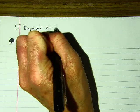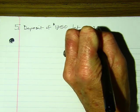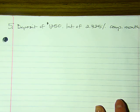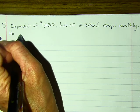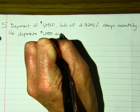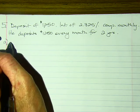I have two more problems I'd like to do with you. Number five: there's an opening deposit of $12.50. The account pays interest of 2.325% compounded monthly. He deposits $12.50 every month for two years. Part A: how much is in the account at the end of the two years?